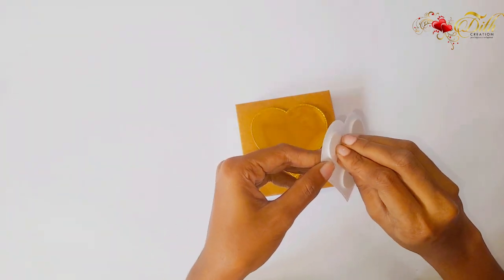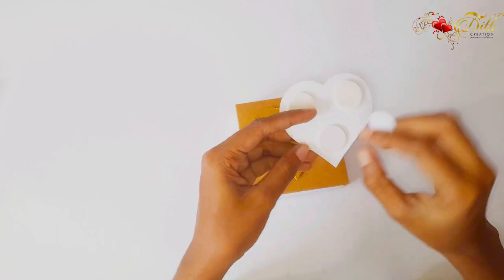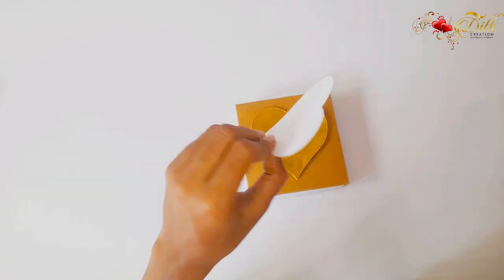I'm taking some double-sided foam tape, removing the liners, and connecting the other die cut.